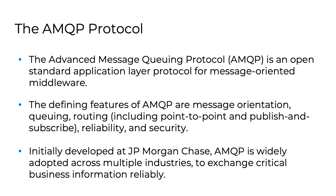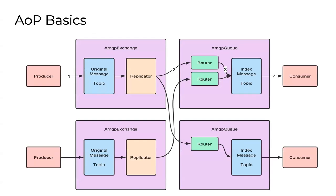A little background on AMQP: it's an application layer standard more than a physical implementation, but it has very unique semantics. It was designed around queuing and routing, so it's true pub-sub. It was originally developed at JP Morgan Chase and then widely adopted — a standard way to exchange business information with guaranteed receipt, reliable publish and subscribe, security features built in. There are hundreds of applications built on it that have been there forever.